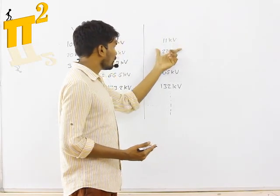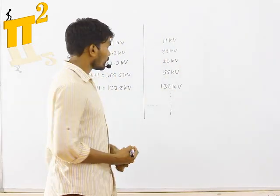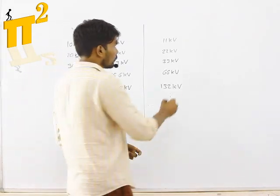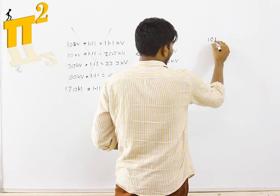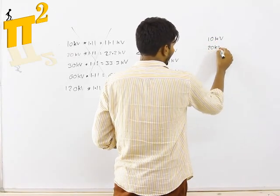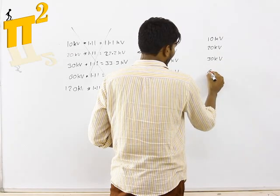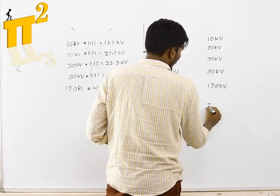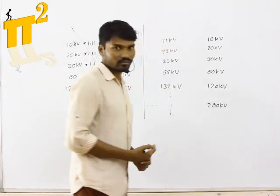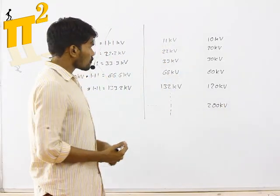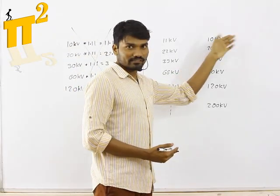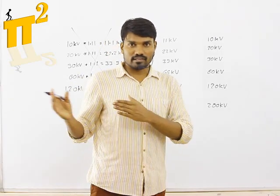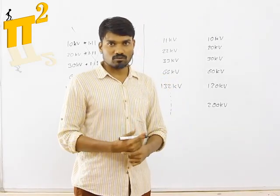Let's get to the right logic. The transmission company intends to deliver at the receiving end values like 10 kV, 20 kV, 30 kV, 60 kV, 120 kV, 200 kV, and so on. Their goal is to deliver these round numbers at the receiving end.